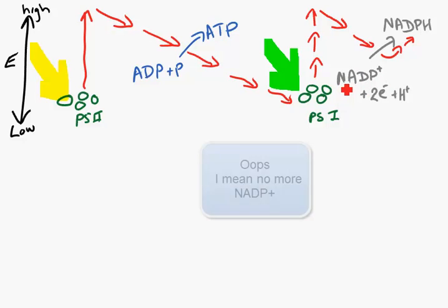After a very long day of sun, we get to a point where there is no more NADP+. At that point, we can't make more NADPH, but we've still got a lot of energy coming in from the sun.